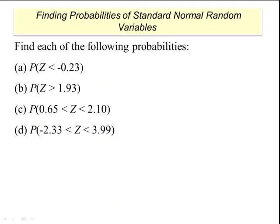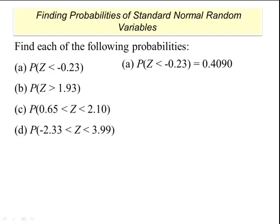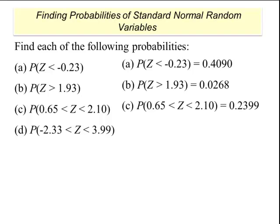Here are some practice problems. Part a: Find the probability that z is less than negative 0.23. The answer is 0.4090. Part b: Find the probability that z is greater than 1.93. The answer is 0.0268. Part c: Find the probability that z is between 0.65 and 2.10. The answer is 0.2399.